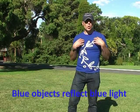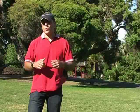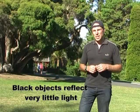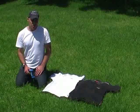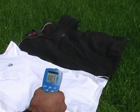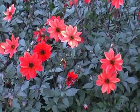We explain why blue objects are blue, why red objects are red, why black objects are black, and why white objects are white, and why white fabrics tend to stay cooler in the sun. We also explain how different shades of colour are produced.